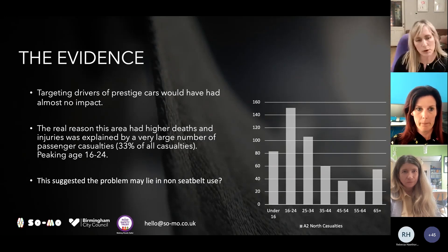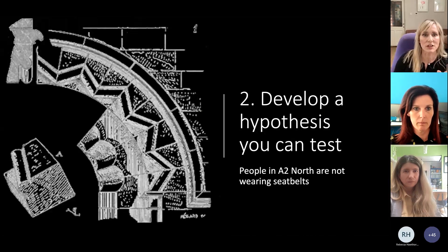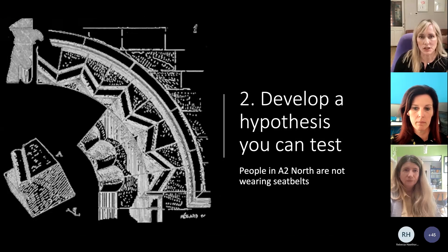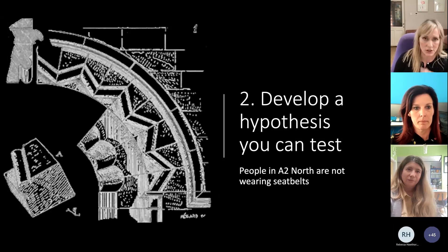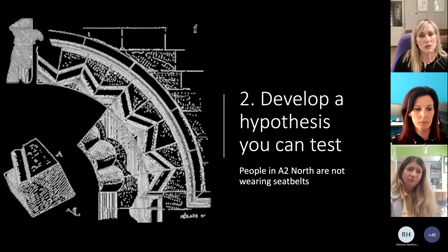Part of the problem may lie in non-seat belt use, which brings me to recommendation two: develop a hypothesis you can test. We tested our initial hypothesis and were able to discount it, but now we had a new one — that people in A2 North are not wearing seat belts.